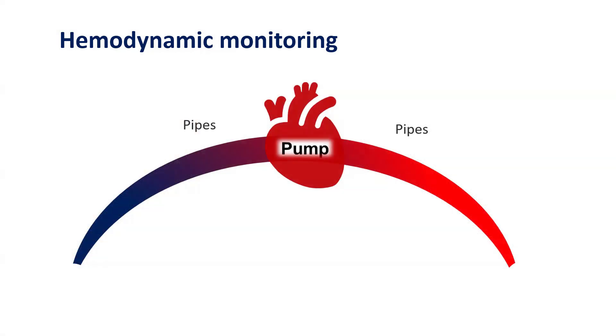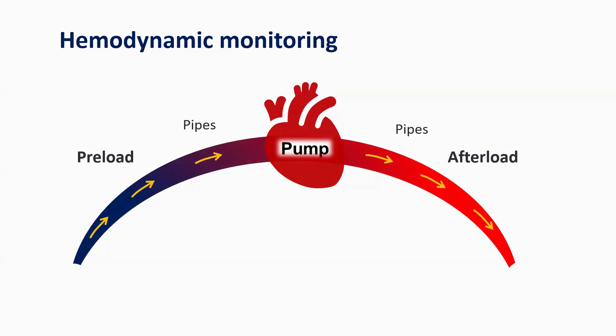Let's try to understand the heart as a pump connected by pipes. The pipes which bring blood towards the heart form the preload, and the pressure against which the heart has to pump forms the afterload.